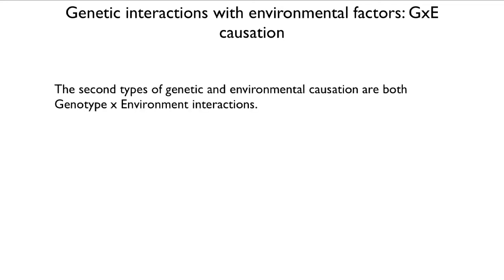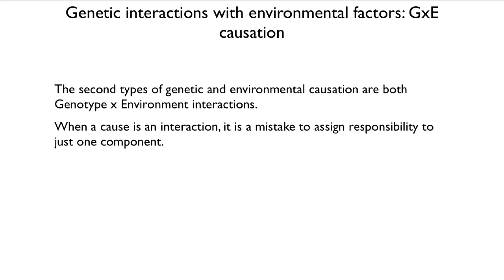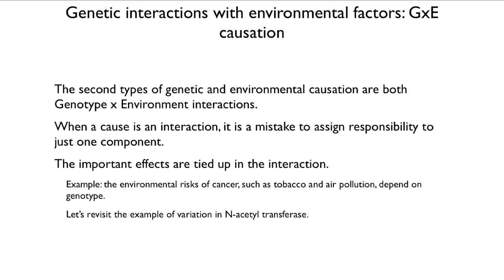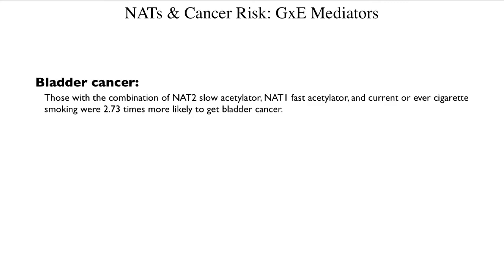Genes interact with environmental factors to elicit disease conditions. Both genetic and environmental causation involve genotype-by-environment interactions, and when a cause is an interaction, it is a mistake to assign responsibility to just one component — the important effects are all tied up in the interaction. For example, the environmental risks of cancer such as tobacco and air pollution depend on the genotype. For bladder cancer, people with the combination of NAT2 slow acetylator and NAT1 fast acetylator who are current or ever-smokers were 2.73 times more likely to get bladder cancer — an interaction between two genes and the environmental factor.